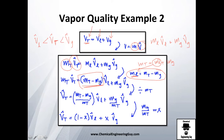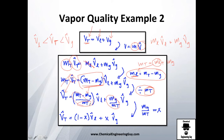Substituting the mass of liquid, I get rid of that term. Now dividing the entire equation by total mass, the fraction of gas over total mass is the vapor quality. So I get the term (1 minus x) and the term x, where x is the vapor quality.